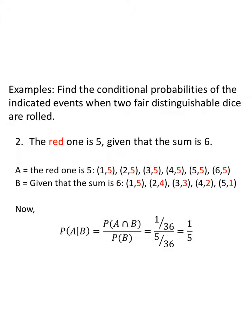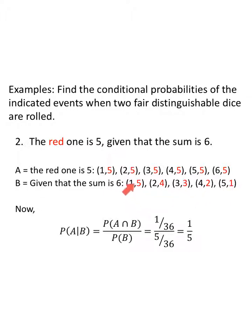Find the conditional probability: two fair distinguishable dice are rolled. The red one is five, given that the sum is six. Event A — the red one is five — lists all rolls where red is five. Event B — the sum is six — happens with (1,5), (2,4), (3,3), (4,2), (5,1). The probability of the intersection is one out of thirty-six. The probability of B is five out of thirty-six. One over thirty-six divided by five over thirty-six is one-fifth, which is 0.2.